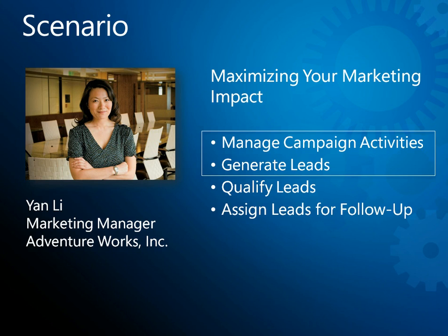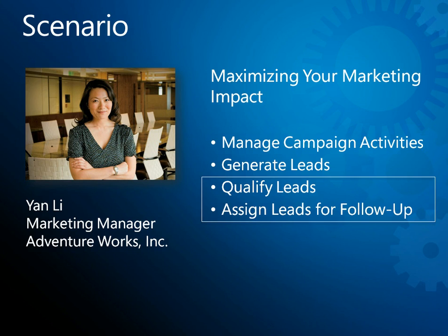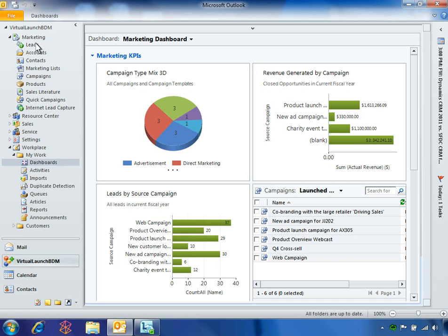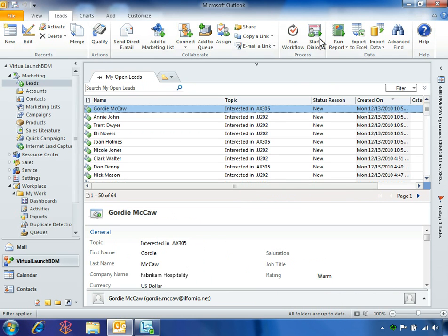We've just seen how Microsoft Dynamics CRM 2011 makes it easy for marketing managers to plan, manage, and track marketing campaigns and leads. Now let's go further. Let's see how Microsoft Dynamics CRM helps marketing organizations qualify their sales leads by delivering consistent customer dialogues and tracking responses. Here at AdventureWorks, the marketing department is responsible for qualifying sales leads and distributing them to the company's regional sales representatives. Yen and her staff use the dialogue feature in Microsoft Dynamics CRM to guide the team through the process of qualifying leads over the phone.